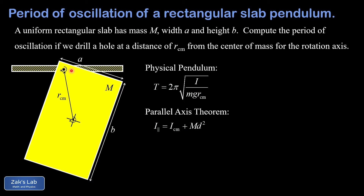To find the moment of inertia of this rectangular slab about its actual rotation axis, we need to know the moment of inertia about the axis passing through the center of mass, and then we add on the term m·d², where we take the total mass of the object and multiply it by d squared. Here d is the distance between the two parallel axes, which in this case we're calling r_cm.